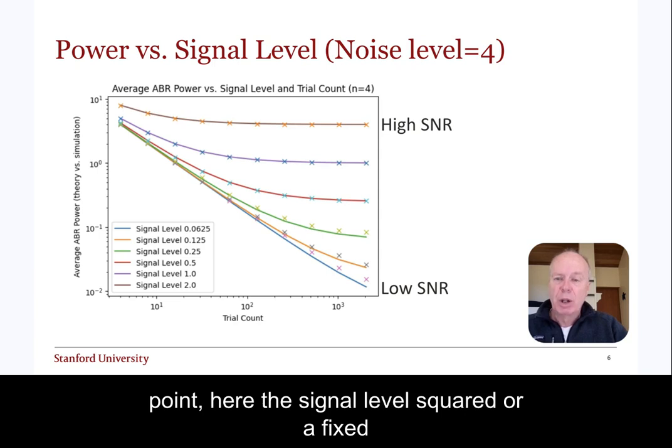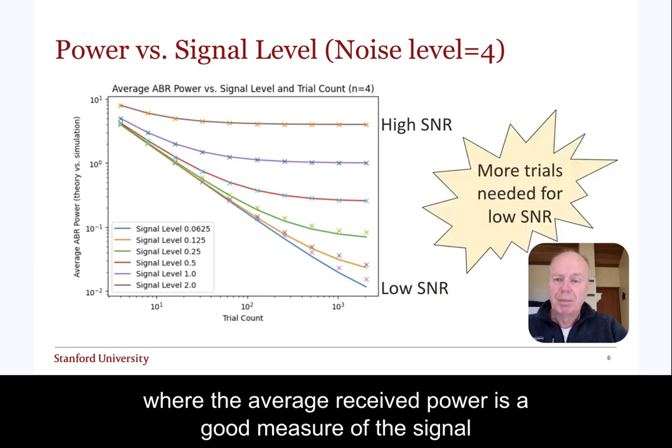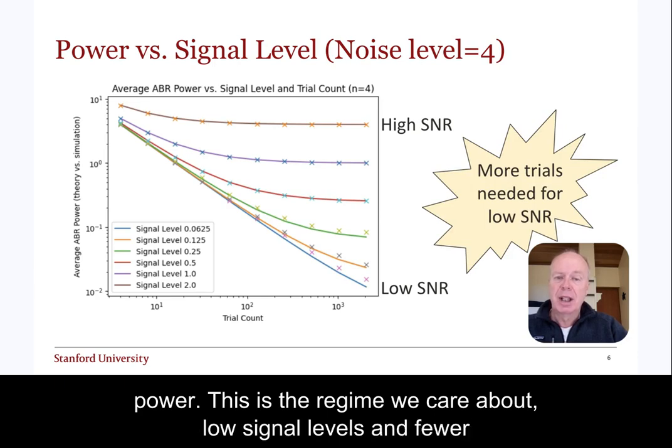But for lower signal levels, it takes many more trials to reach the asymptote, where the average received power is a good measure of the signal power. This is the regime we care about: low signal levels and fewer trials.